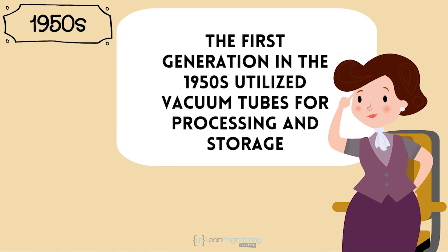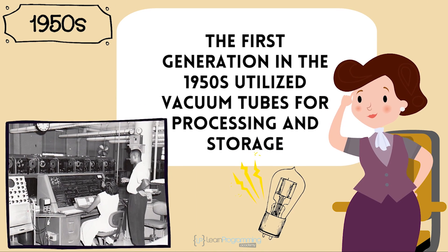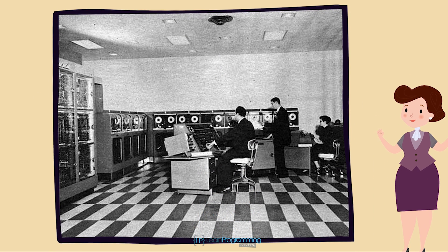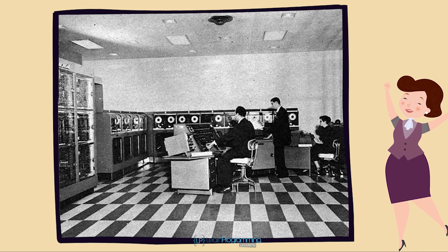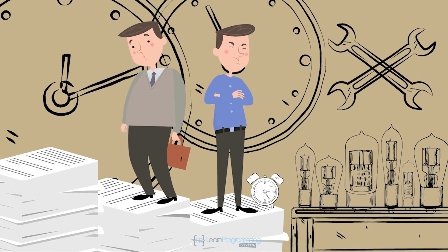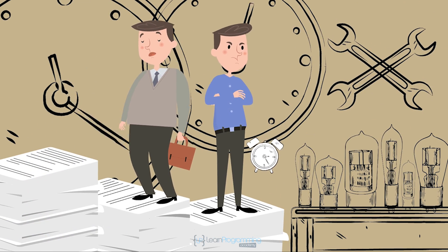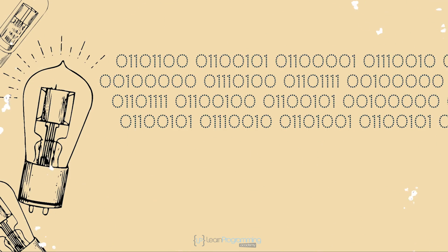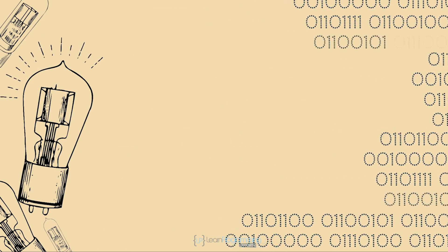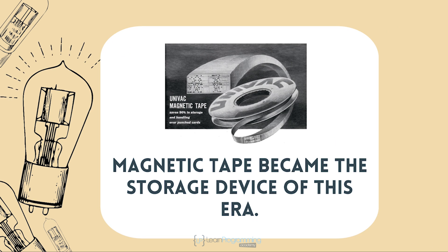The first generation in the 1950s utilized vacuum tubes for processing and storage, and were massive in size, consuming entire large rooms. It could take days or even weeks for people to reconfigure these massive devices in preparation for another calculation to be done. Magnetic tape became the storage device of this era.